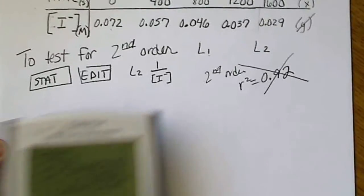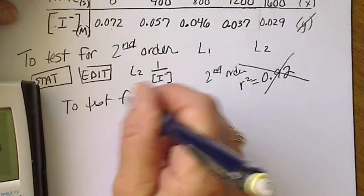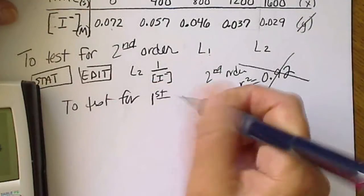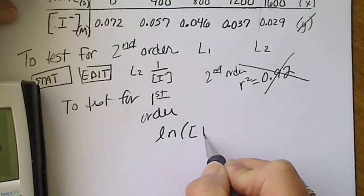So now I'm going to test for first order. Remember, what is linear there is the natural log of the concentration of I minus.